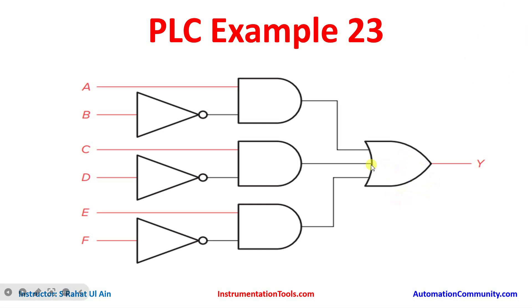This parallel representation implements an OR logic gate. A-B and C-D will be connected in parallel, and E-F will also be connected in parallel with C-D. Now let's move to TIA Portal where we will draw the ladder logic for this example and implement the different logic gates.